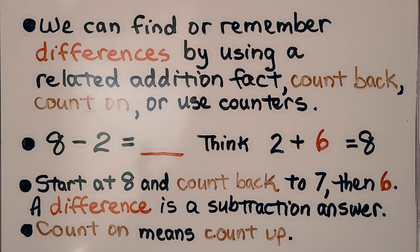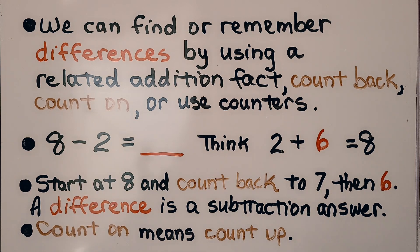Here we have 8 minus 2. We think of the related addition fact: 2 plus 6 is equal to 8. The answer — the difference — must be 6. We can start at 8 and count back to 7, then 6. We counted back 2, and it brought us to 6.